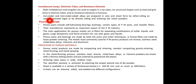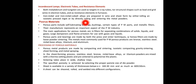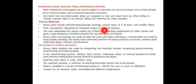Iron-nickel and iron-nickel-cobalt alloys are prepared in wire and sheet form by either rolling an isostatically pressed ingot or by directly rolling and sintering the metal powders. Porous parts include self-lubricating bearings, bushings, certain types of powder metallurgy parts, and metallic filters.